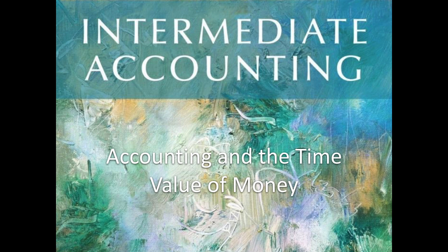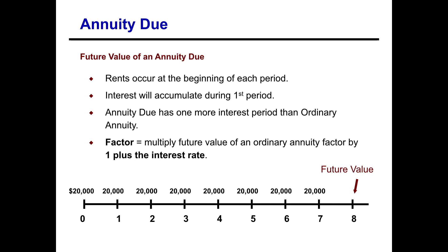In this video on time value of money, we're going to be talking about the second type of annuity — annuity due — and specifically the future value of an annuity due. This is where your rents or payments occur at the beginning of each period. Interest will accumulate during the first period, unlike in the ordinary annuity, and the annuity due has one more interest period than the ordinary annuity because of that first period of interest.